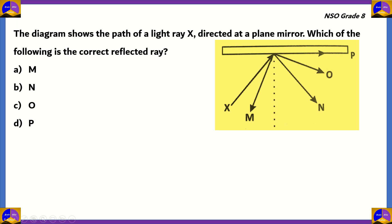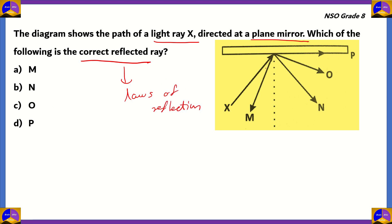Now let's look at the final question for today. The diagram shows the path of a light ray X directed at a plane mirror. Which of the following is the correct reflected ray — M, N, O, or P? To solve this, we apply the laws of reflection. The first law states that the incident ray, the reflected ray, and the normal at the point of incidence all lie in the same plane. The second law states that the angle of incidence is always equal to the angle of reflection. X is the incident ray, as its arrow points toward the mirror.